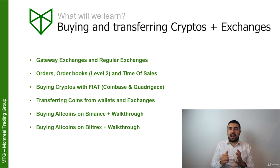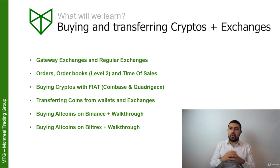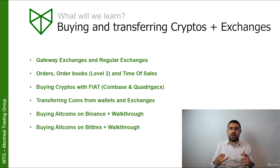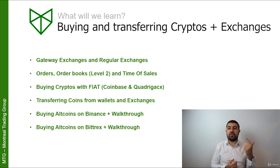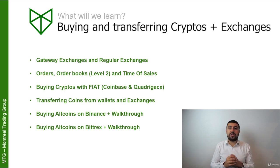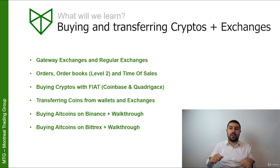And now we're finally ready to go buy some cryptos and start transferring them. In this section, we're going to be learning about gateway exchanges and regular exchanges. We're going to be learning about order books, time of sales, orders, how to buy cryptos with fiat, which exchanges to use for that, and transferring coins between wallets to exchanges. Then we're going to get on some exchanges like Binance and Bittrex, go buy some altcoins, and have a full walkthrough of those exchanges.